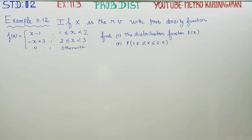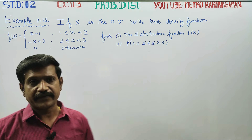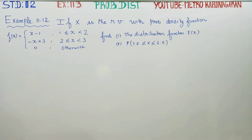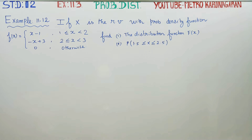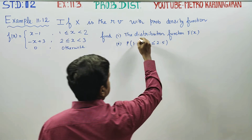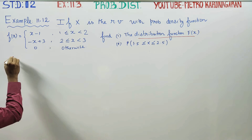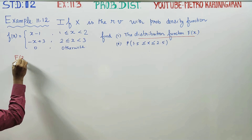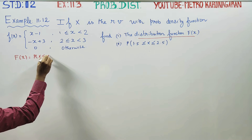Dear 12th standard students, in probability distribution, Exercise 11.3 related example 11.12. They are asking us to find capital F of X, the cumulative distribution function. First, capital F of X — the formula: capital F of X is equal to probability of X less than or equal to x.